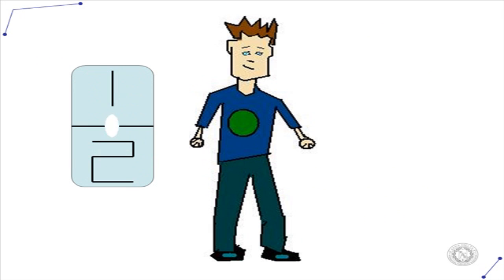In a fraction, we call the top number the numerator, and the bottom number is called the denominator. If the denominator, the bottom number, is the same, you can simply add the numerators.